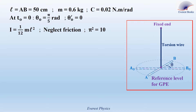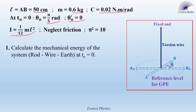Consider a torsion pendulum consisting of a uniform thin rod AB of length L equal 50 cm and mass M equal 0.6 kg, connected from its midpoint to a vertical torsion wire of torsion constant C equal 0.02 Nm per radian. The rod is rotated from its equilibrium position about a vertical axis delta by an angle of pi over 5 radians, then released from rest at T0 equal 0, meaning theta prime of 0 equals 0. The moment of inertia of the rod about delta is I equal 1 over 12 mL squared. Neglect friction and use pi squared equal 10.